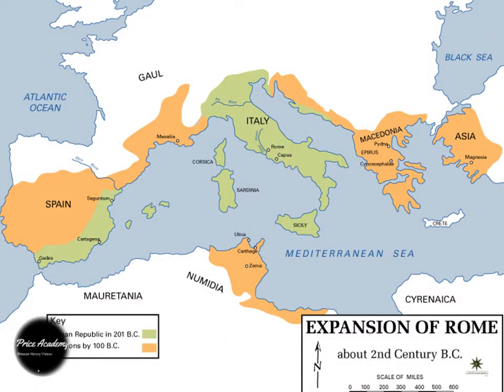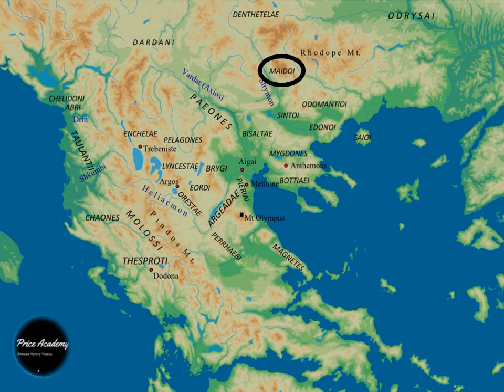Spartacus was born in Thrace, an area where the modern day Balkan states including Turkey, Bulgaria and Greece are located. Spartacus could have possibly belonged to a mighty tribe and once was a soldier with the Romans, but became a prisoner perhaps due to rebellion against or desertion from the army, and then was sold as a gladiator.